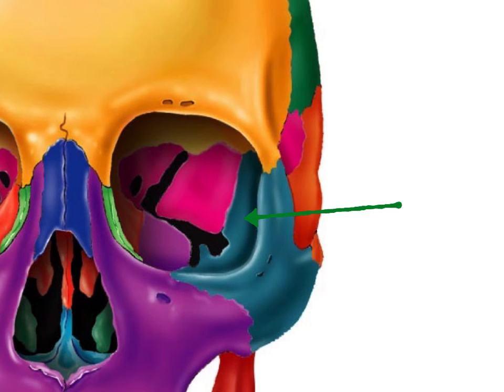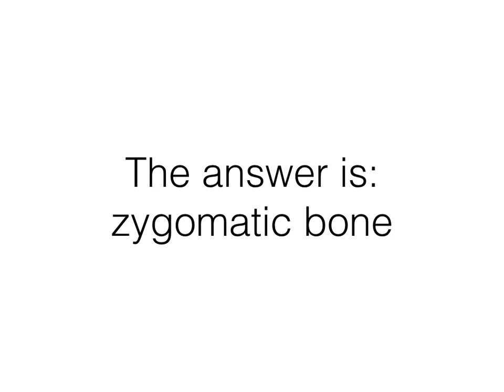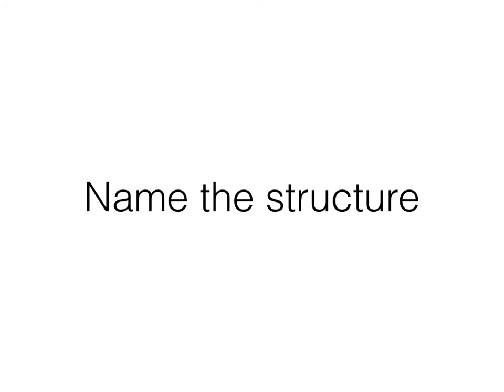On this next one, I just want to know the name of this bone — kind of zoomed in a little bit here to that orbital area. That's your zygomatic bone, which makes up a lot of your eye socket.